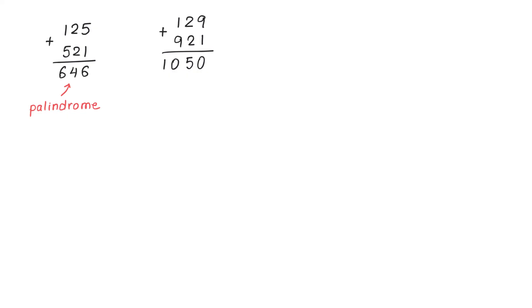But let's repeat the process by reversing 1050. So we have 1050 and if we reverse it, we get 0501. And now let's add these two numbers. The result will be 1551. So in this example, after two steps, we got a palindrome.